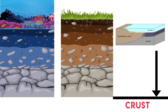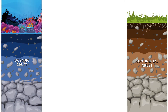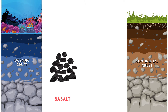The depth till which rocks are found is called the crust. Crust is thick on continents and is called continental crust, whereas oceanic crust is about 5 km deep. Oceanic crust is mostly made of basaltic rocks which are dense, whereas continental crust is made of granite, which is a less dense material.